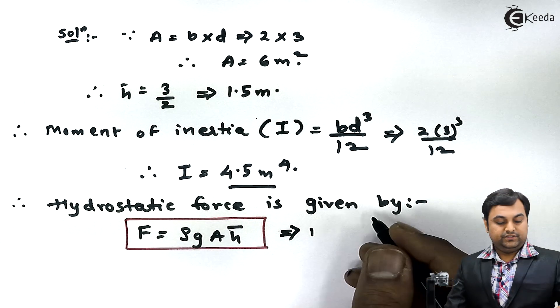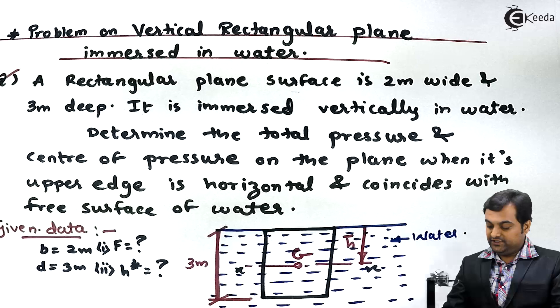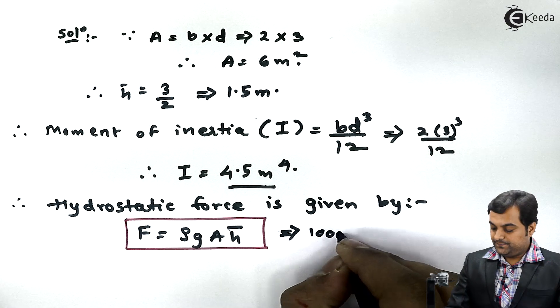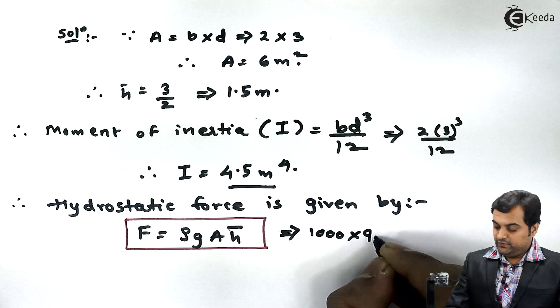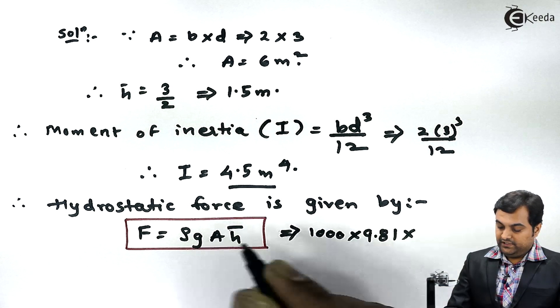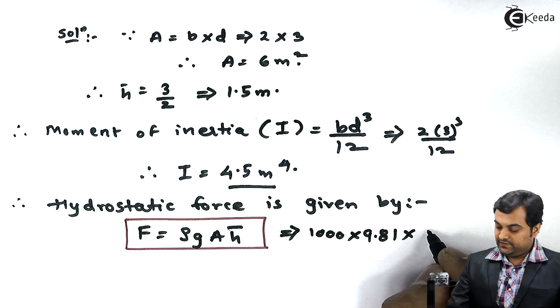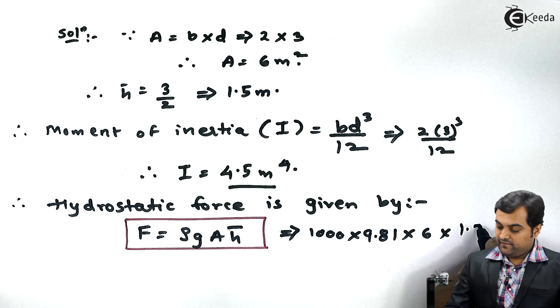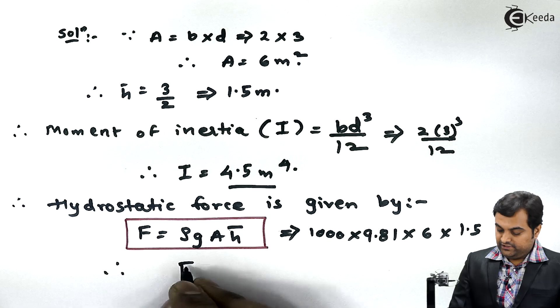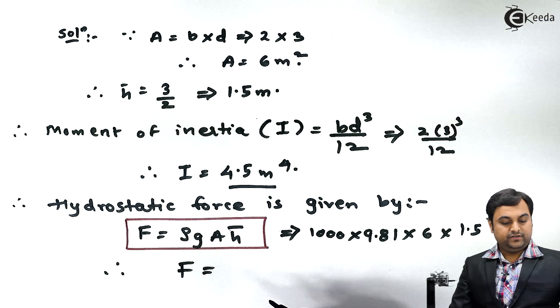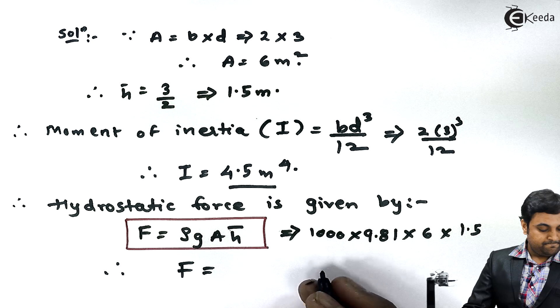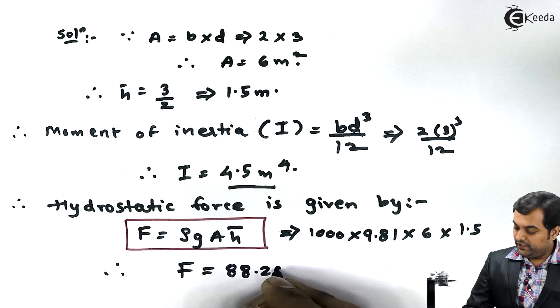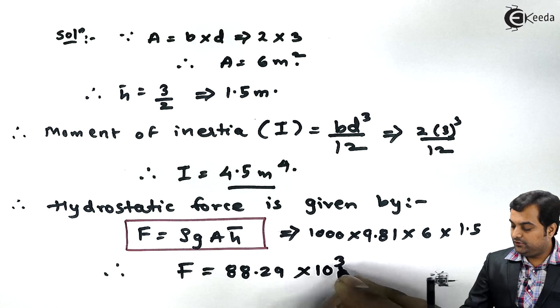is the density of the fluid. Since here in the question it is mentioned that it is water, so the density of water is 1000. G is 9.81, capital A is 6 - that is the area - H bar is 1.5. So from this if I calculate the hydrostatic force, answer comes out to be 88.29 into 10 raise to 3 Newton.